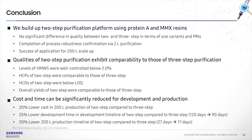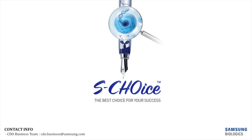In summary, we completed the establishment of a two-step purification platform using Protein A and MMC resins. With applications at small-scale 2-liter verification runs and 200-liter production runs, process robustness and scalability were confirmed. We demonstrated that the two-step purification platform was comparable to the three-step platform in terms of yield, purity, and impurity clearance. Finally, by applying two-step purification, we confirmed that cost and time can be significantly reduced. This is the end of my presentation — thank you for your attention.